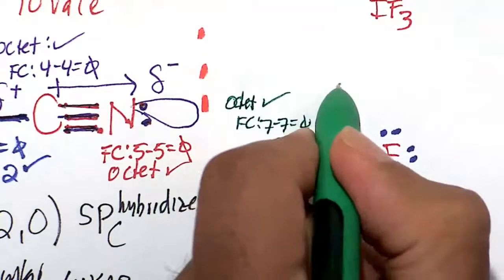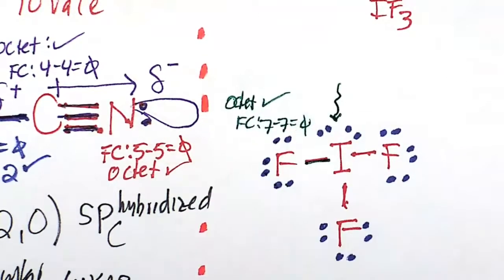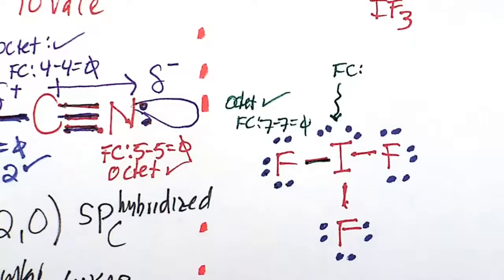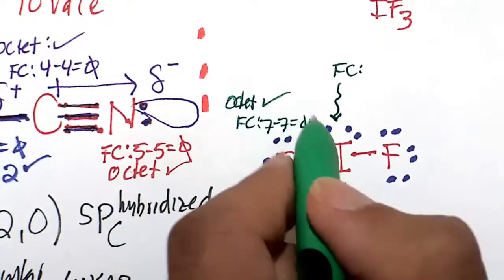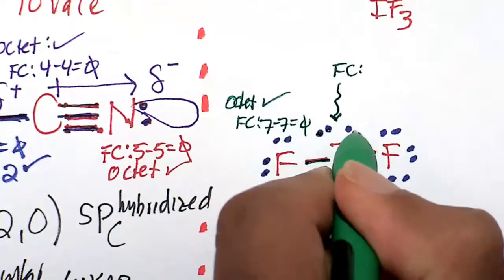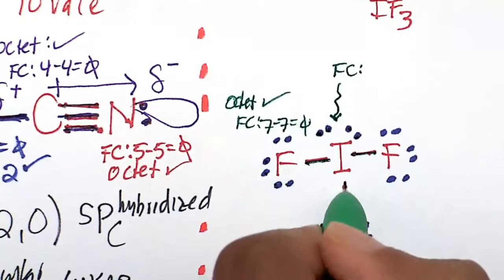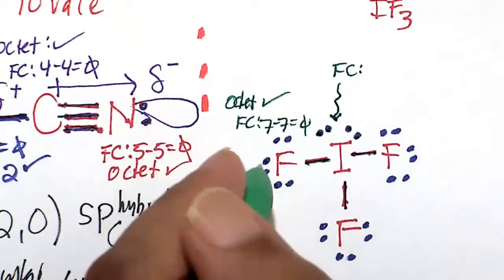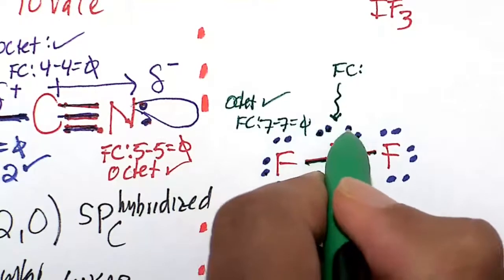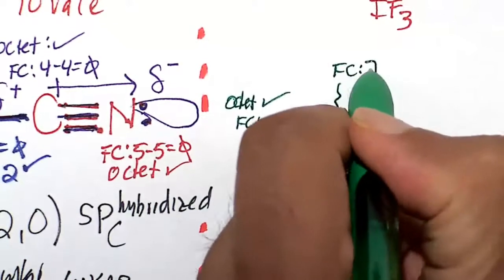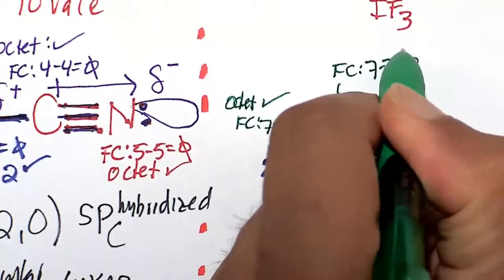Let's look at the formal charge and octet rule for the central iodine atom. The most important one is formal charge: valence electrons minus the number of electrons around the atom. Counting the electrons around iodine gives us 7. Iodine is happy at 7, so 7 minus 7 is 0.